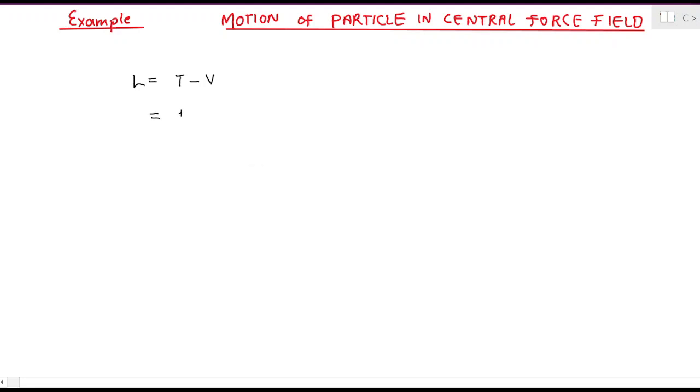The kinetic energy in polar coordinates is given as one half m v², where the velocity squared in polar coordinates is ṙ² + r²θ̇². Since we are using a central force field,